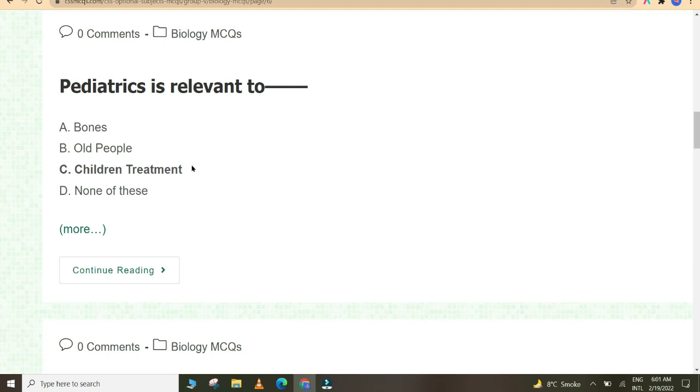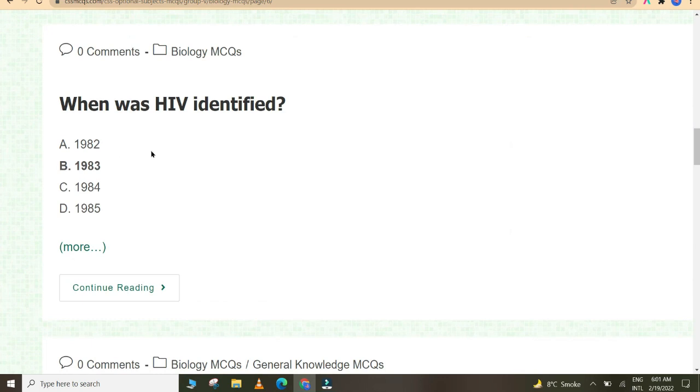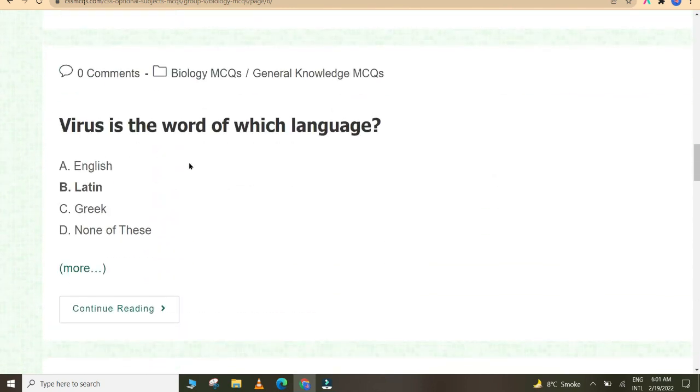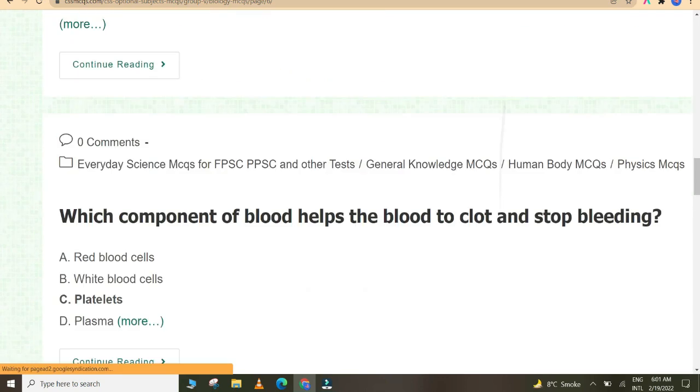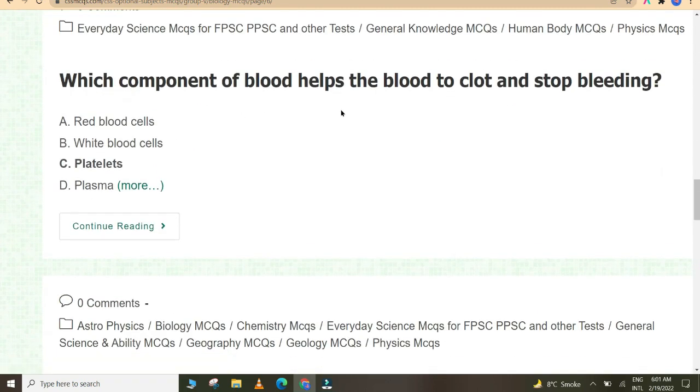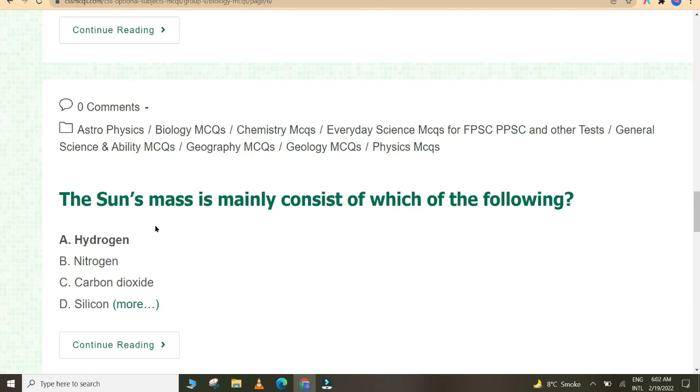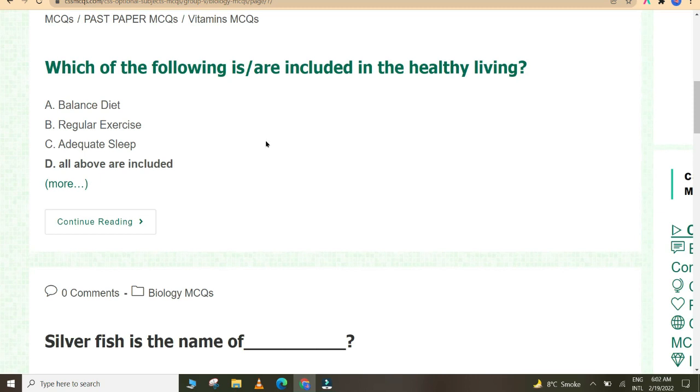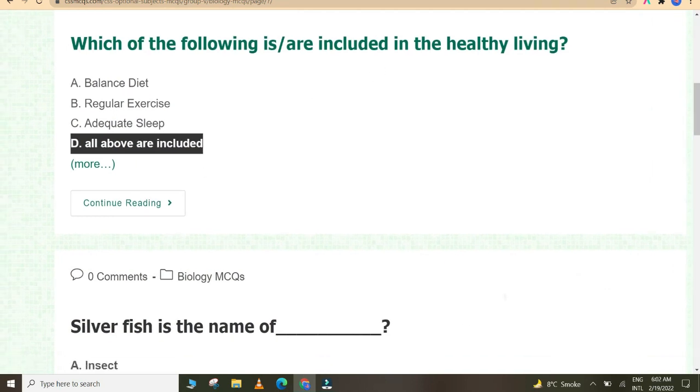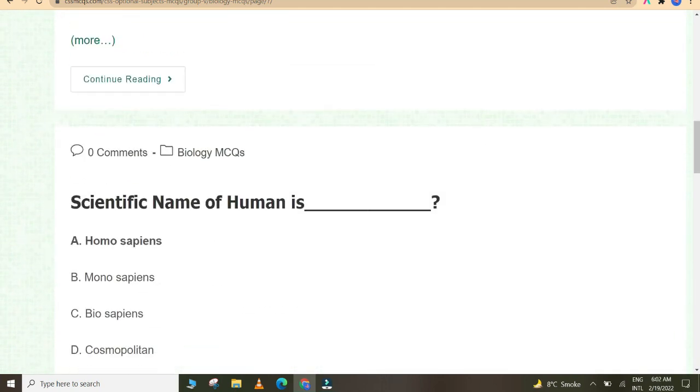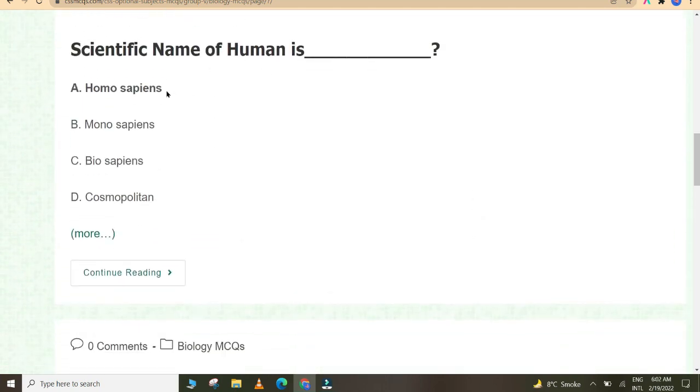Pediatrics is relevant to children treatment. When was HIV identified? In 1983. Virus is the word of which language? Latin. Which component of blood helps the blood to clot and stop bleeding? Platelets. The sun's mass is mainly composed of which of the following? Hydrogen. Which of the following are included in healthy living? All of the above: balanced diet, regular exercise, and adequate sleep.